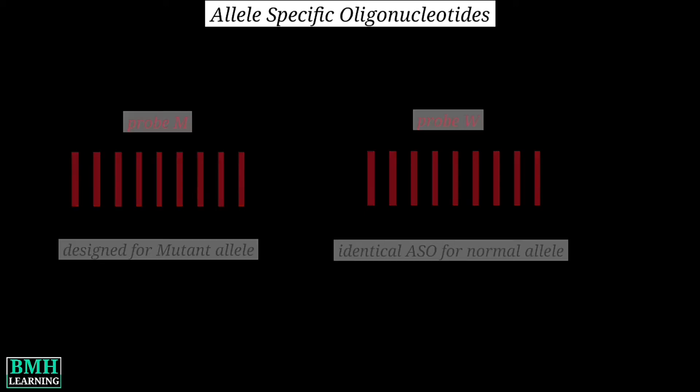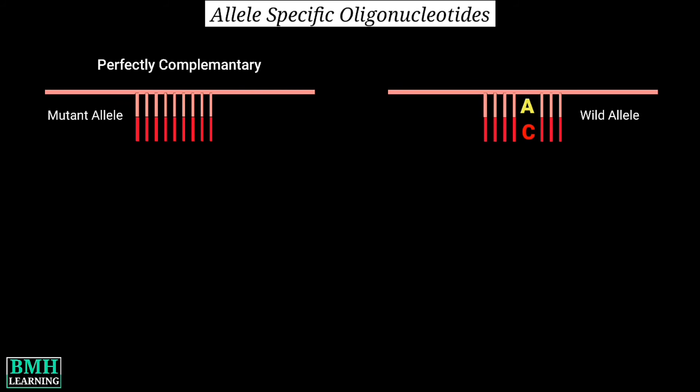Each ASO is complementary to its target sequence and hence will bind strongly. But if you look closely, probe M has a single mismatch against its non-target allele — that is, the normal or wild one. This mismatch leads to weaker interactions.